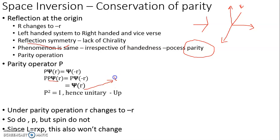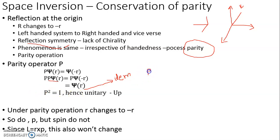The parity operator has important mathematical properties: it is both self-adjoint (Hermitian) and unitary. This means P-dagger equals P, and P equals P-inverse, so P-dagger equals P-inverse as well.